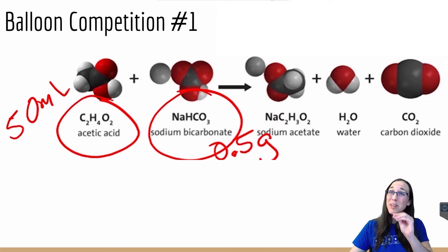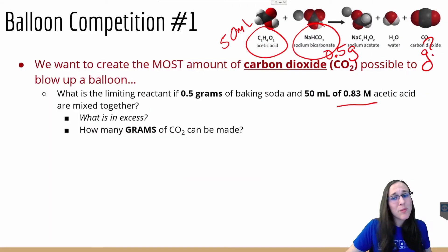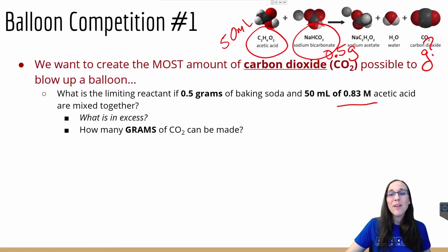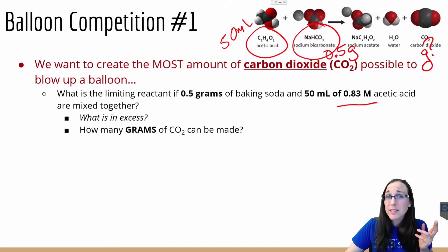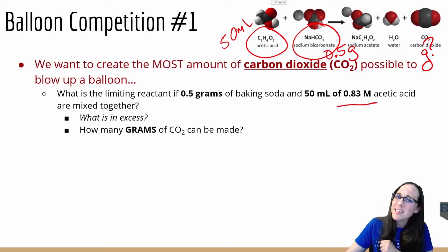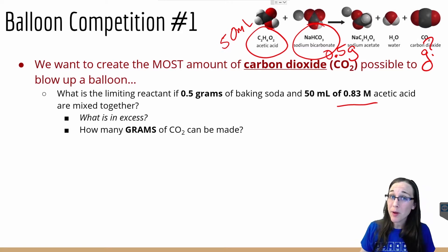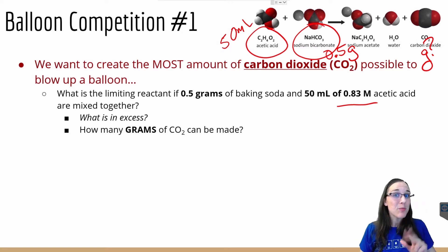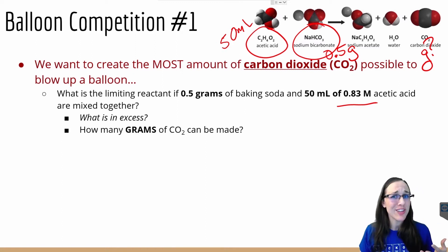If we mix those two together, we want to know how much carbon dioxide gas we can theoretically make. This will be based off of the limiting reactant, and therefore how much excess is also left over. I'm going to work through this problem with you, but the next three will be sped up quickly so that you can just check your answers. Let's do this!